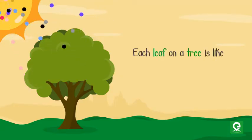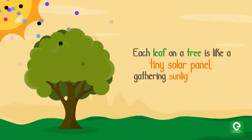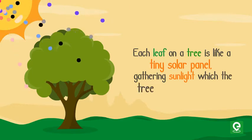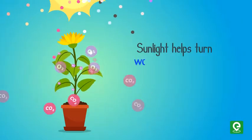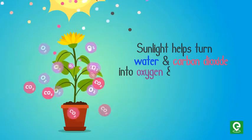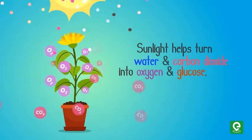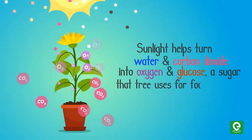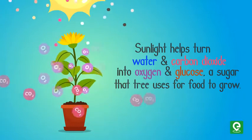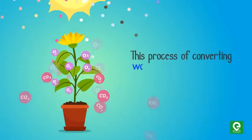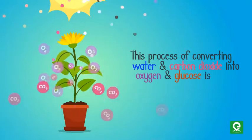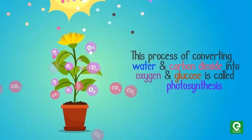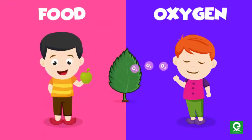Each leaf on a tree is like a tiny solar panel, gathering sunlight which the tree uses to make food. Sunlight helps turn water and carbon dioxide into oxygen and glucose — a sugar that the tree uses for food to grow. This process of converting water and carbon dioxide into oxygen and glucose is called photosynthesis. Leaves provide food and oxygen.